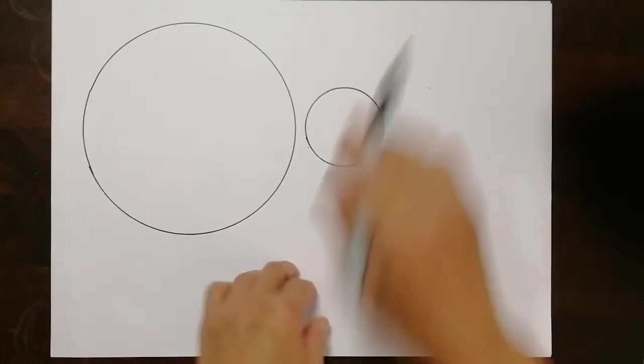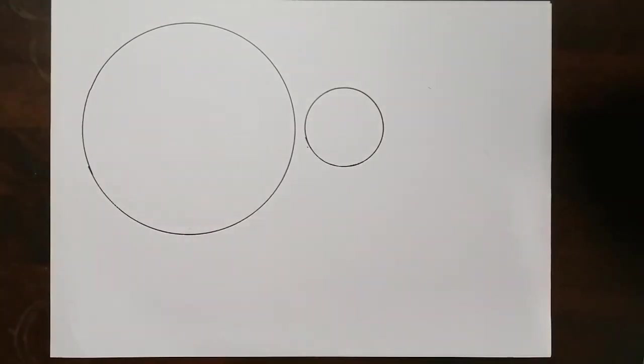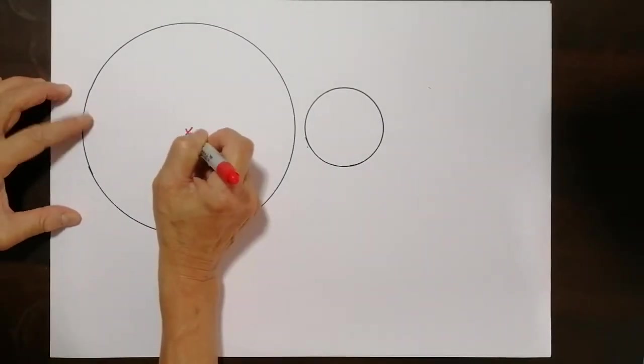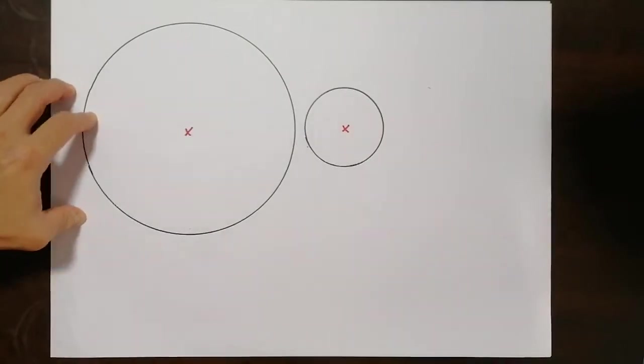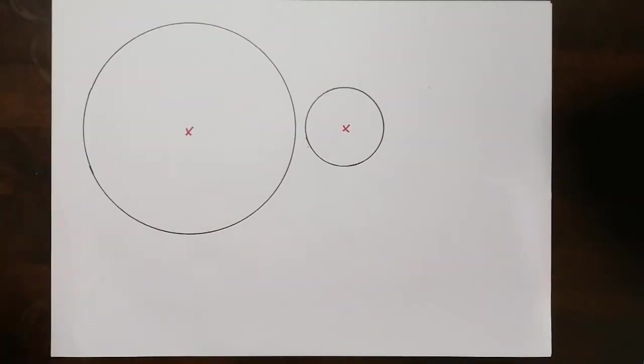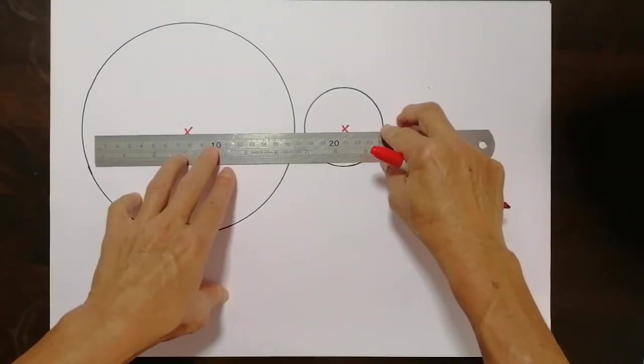Now you know pulleys are round, and being round there will be a center point. Let me locate the center point of this pulley. Let me estimate that it's somewhere over here and somewhere over here, and allow me to join the center distance of these two pulleys.